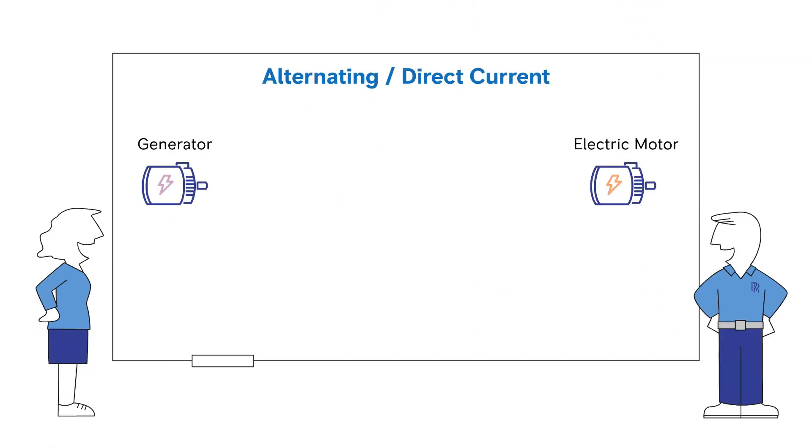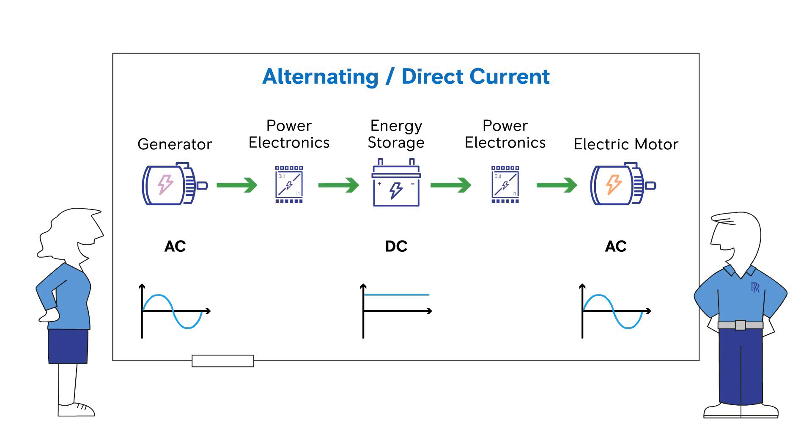Electric motors and generators operate with alternating current, while power distribution and energy storage for efficiency use direct current. Power electronics are integrated into the system to change the current into the form needed and control power flow at each point in the system.